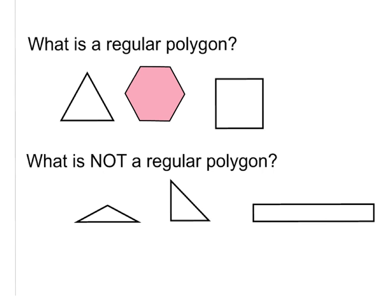For this lesson, we're going to decide what is a regular polygon and what is not a regular polygon. The definition of a regular polygon is that it must have all same angles and all equal sides. So let's take a look at this triangle right here. You can see that all of the angles are acute to the same degrees and all the lengths are the same sides. Therefore, this would be called a regular polygon.